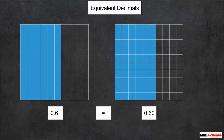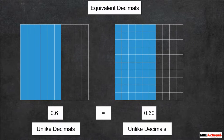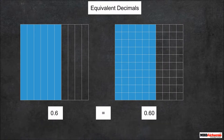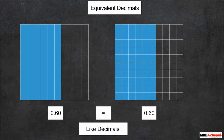These two are unlike decimal numbers as they don't have the same number of digits after the decimal place. But we can put a zero after the 6, as the value of the number will not change. This makes the number of digits after the decimal place equal in both numbers, making them like decimals.